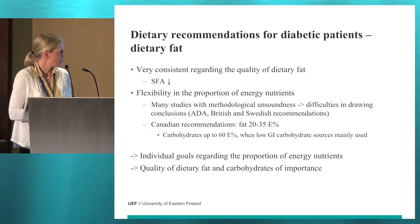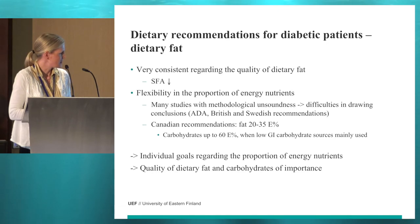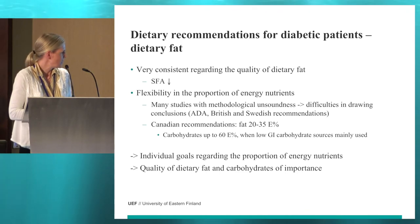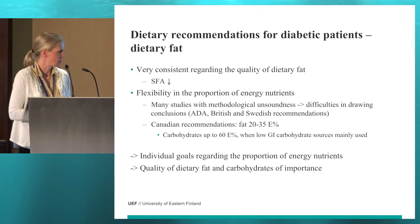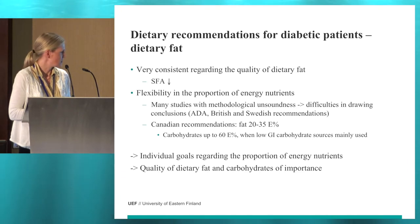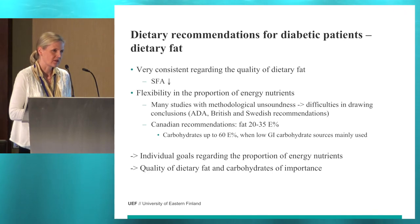The Canadian recommendations recommend the proportion of fat to be 20 to 35 percent of energy intake, and they specifically state that carbohydrates can comprise up to 60 percent of energy intake when low GI carbohydrate sources are mainly used. For diabetic patients, individual goals regarding the proportion of energy nutrients can be set as long as the quality of dietary fat and carbohydrates is taken carefully into consideration.